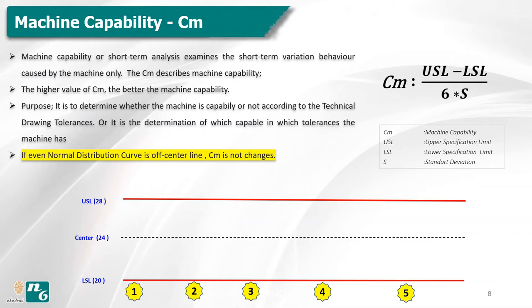The purpose of the machine capability study is to determine whether the machine is capable according to technical drawing tolerances, or to determine within which tolerances the machine is capable. Importantly, if the normal distribution curve is off-center, CM does not change. This is the most important point to understand about machine capability.